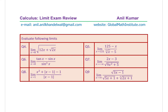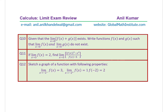Question 10: given that the limit of f of x plus g of x as x approaches 0 exists, write functions f of x and g of x such that the limit of f of x as x approaches 0 and the limit of g of x as x approaches 0 do not exist individually. These are communication-based questions — justify your answer for full marks. Question 11: if the limit of f of x equals 2 as x approaches 3, find the limit of (f of x cubed minus x squared) over (f of x minus 5) as x approaches 3.